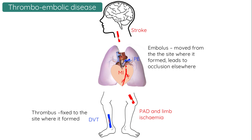Deep vein thrombosis is an example of a thrombus which can potentially embolise and lodge elsewhere in the circulation, such as the lungs, where it becomes a pulmonary embolus.